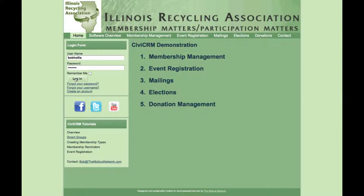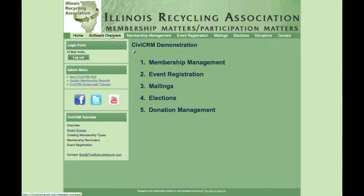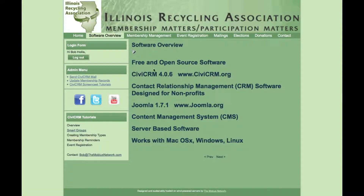I'll log in here. A quick software overview: CiviCRM is free and open source software — it does not cost anything to use, but it's nice if you can contribute back to the community in some way. Here's a link to further information at CiviCRM.org. It's a contact relationship management software program designed for non-profits. We're working with Joomla 1.71 for the website software — more information at Joomla.org. It's a content management system, also known as a CMS, and any of this software works just fine regardless of the type of machine you're using.